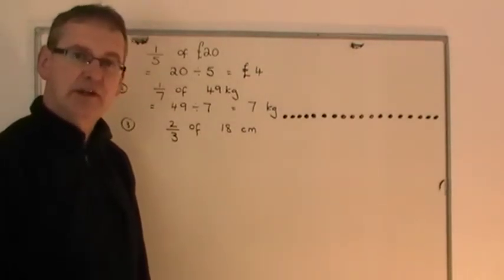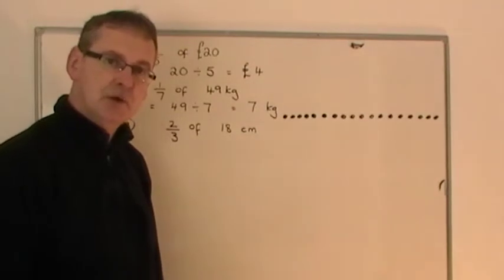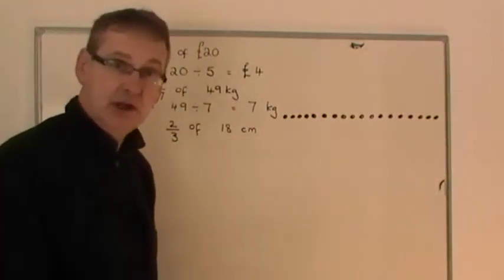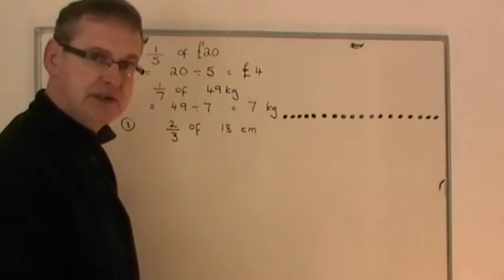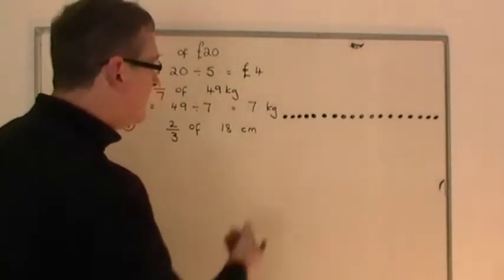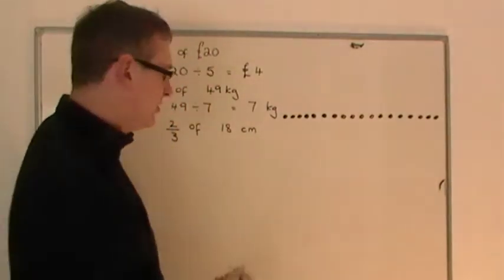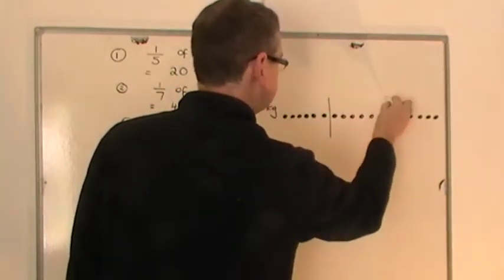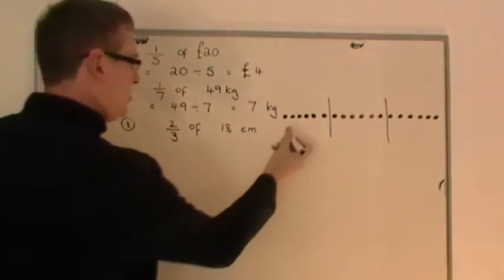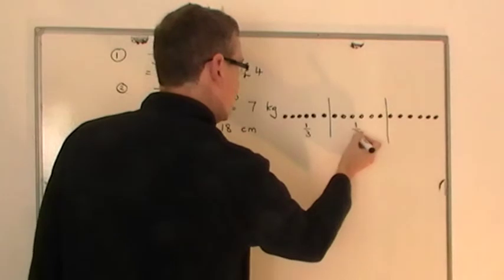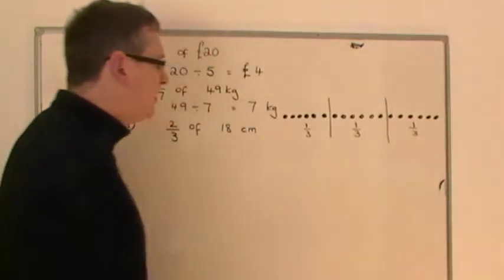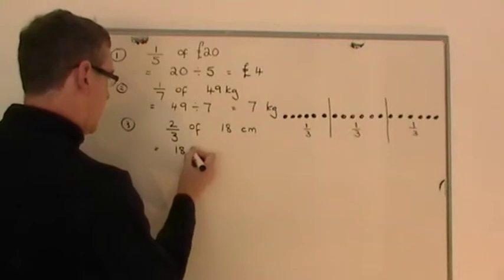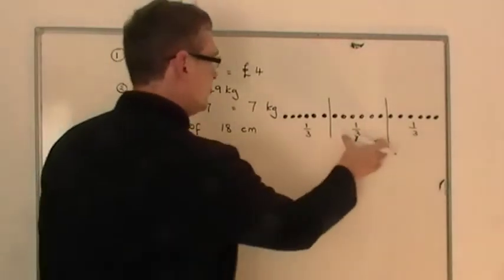If I want two-thirds of that, what I do first is share it into thirds — three equal portions. If I have 18 of them — they can be pennies, pound coins, buttons, centimetres, whatever — and I chop them into three equal portions, I get one portion, another portion, and a third equal portion. Each one of these is one-third — one portion out of three of what we started with. So to get one-third, I take the 18 and share it into three equal portions.